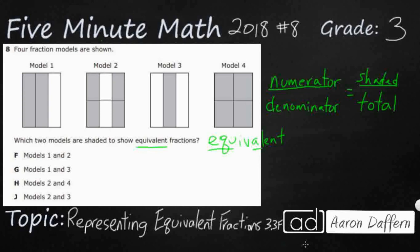So if we wanted to look at this first model, we would say this is two-thirds. The reason we know it's two-thirds is because there are two shaded pieces and there are three total pieces.